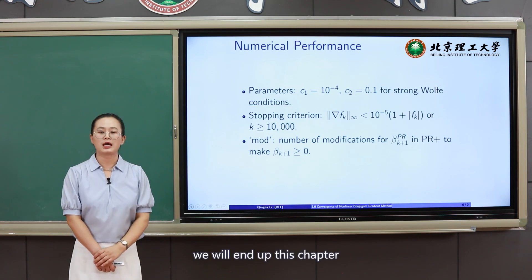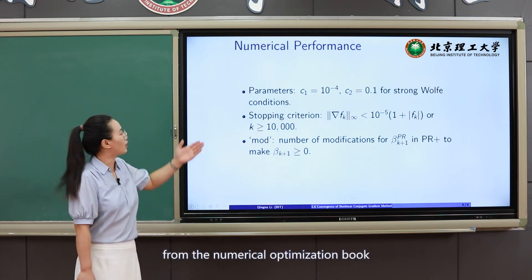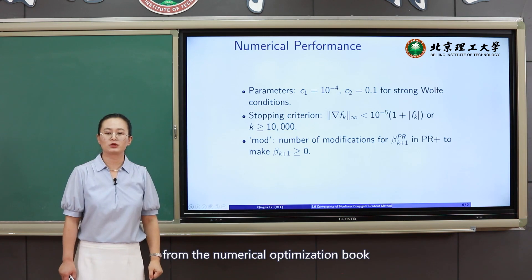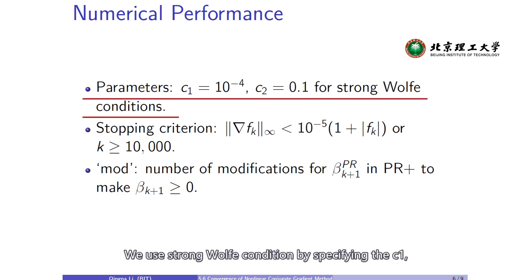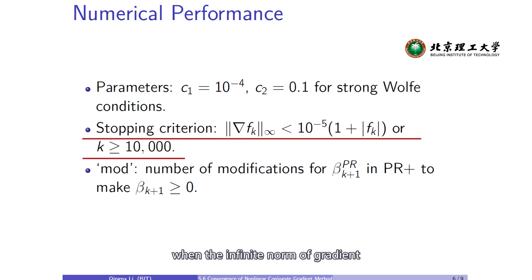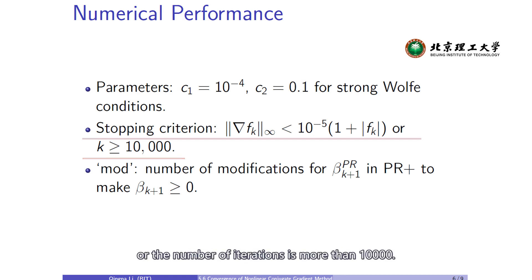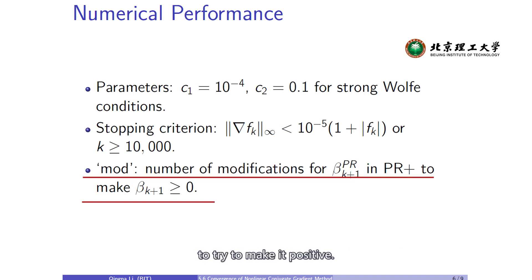Finally, we present some numerical results, originally from the numerical optimization book by Nocedal and Wright. The parameters are set as follows: we use the strong Wolfe condition by specifying the C1 and C2 parameters. We stop the algorithm when the infinity norm of the gradient is smaller than a specified tolerance, or the number of iterations exceeds 10,000. Here, 'mod' denotes the number of modifications to the coefficient beta-PR to make it positive.